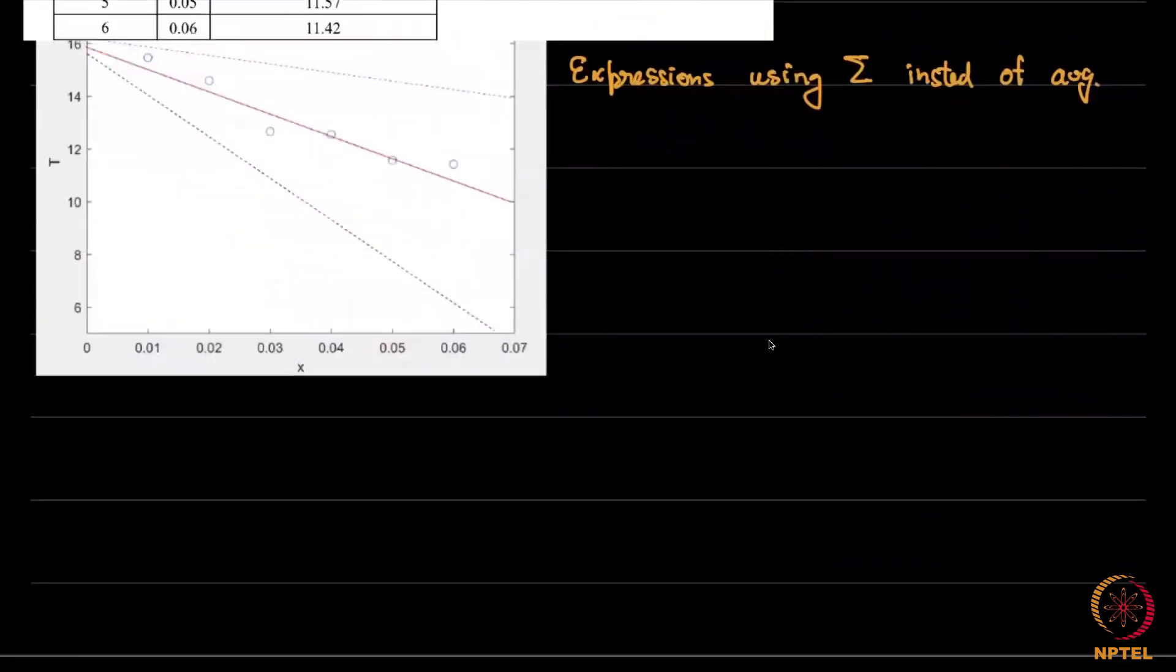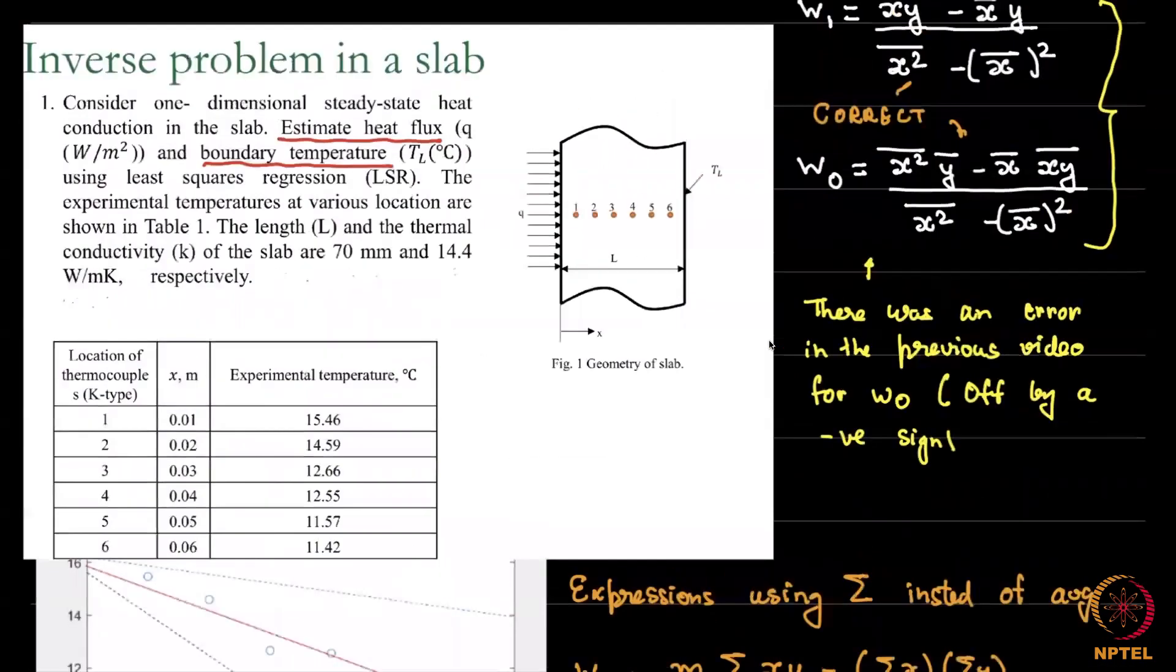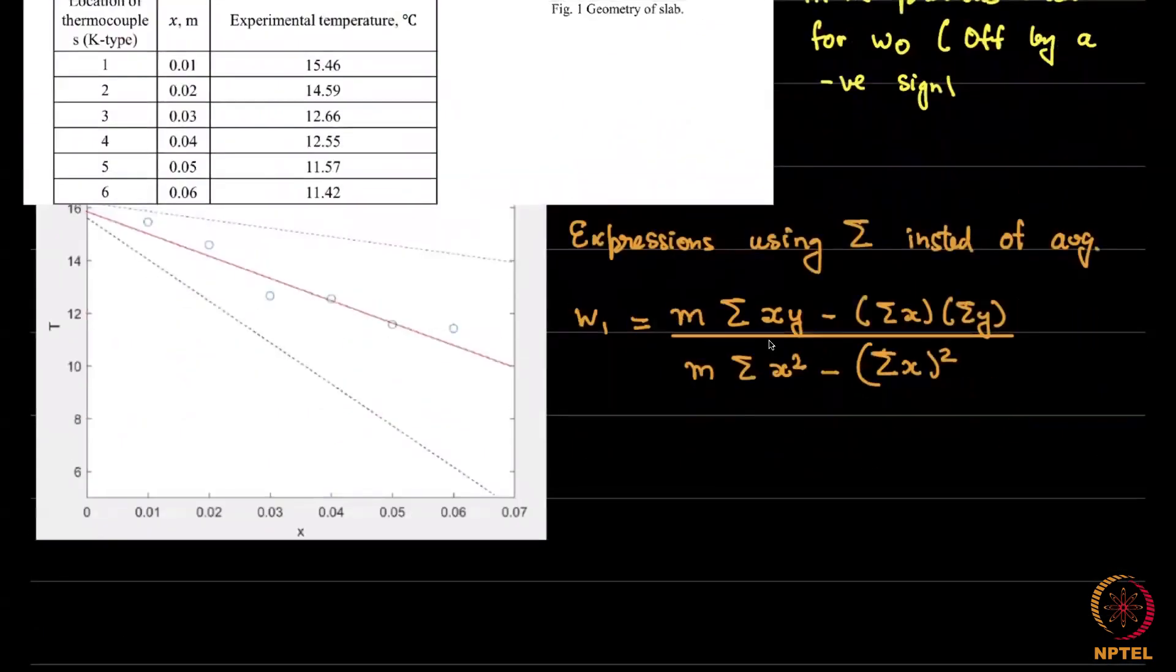So w1 is the number of data points m multiplying sigma xy, summation is over the number of examples, multiplied by sigma x multiplied by sigma y. The whole thing divided by m times sigma x square minus sigma x the whole square. So we collect that.